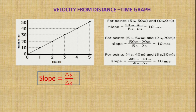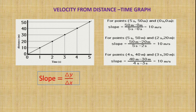You have to take two reference points. For example, at 5 seconds and 50 meter, and 0 seconds and 0 meter: slope = (50 − 0) / (5 − 0) = 10 meter per second. Taking another set of points — 5 seconds and 50 meter, and 2 seconds and 20 meter: slope = (50 − 20) / (5 − 2) = 10 meter per second. For the third set also, the slope is 10 meter per second.